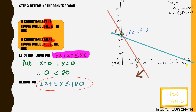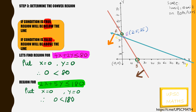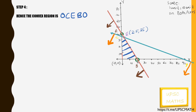Let's find the region for the second constraint. The required solution space is the region where both regions are intersecting. Hence the solution space is OCEBO, and this closed shape represents that the solution space is an enclosed region.